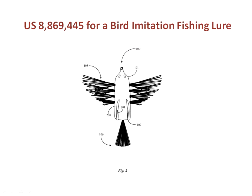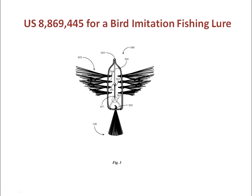Here is figure two of the bird lure patent, showing all of the elements of figure one in a top view, also called a plan view. Figure three is a section view, also called a cutaway view, to show elements within the hollow body of the lure.